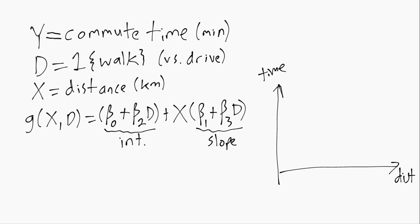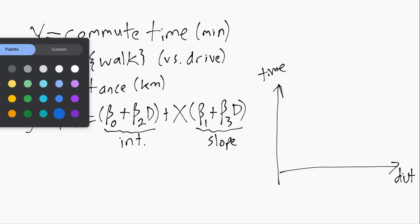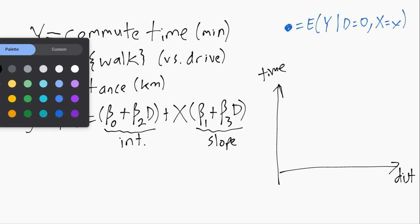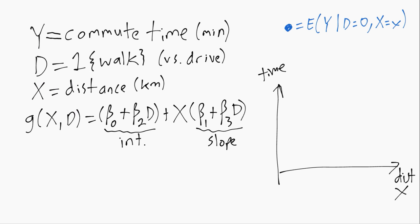First we can think about the conditional means. So we'll put blue dots for the mean commute time given d equals 0, so driving and then x equals whatever value down here. Just to clarify, this is our x on the x-axis.